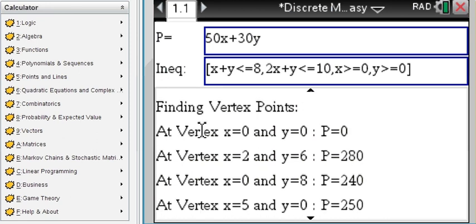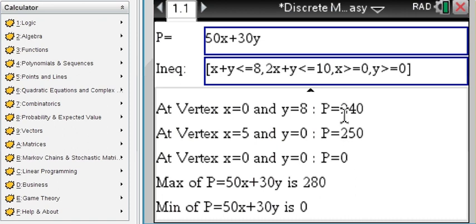and then you can just check the vertex points values. The vertex points are here and the profit at those values of those x vertex points is computed right here, get 0, 280, 240, 250, and so you can see that the maximum is 280.